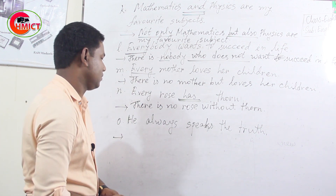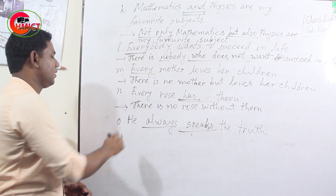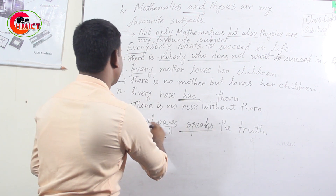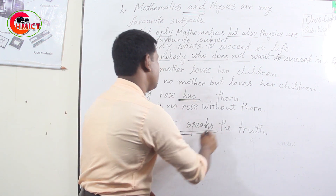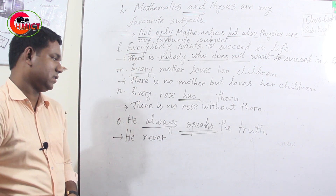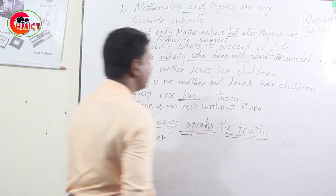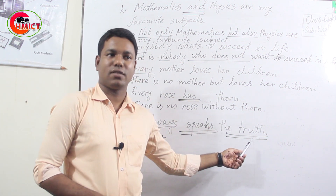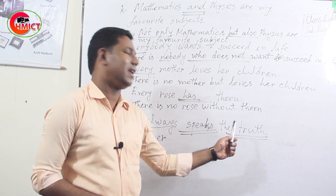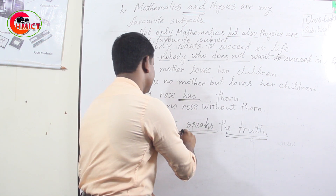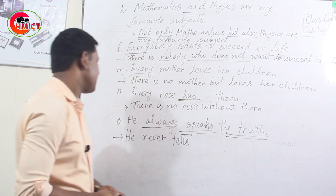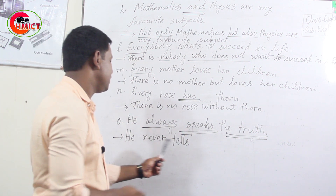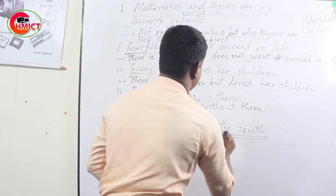For sentence O: 'He always speaks the truth.' You have to use 'never' at the place of 'always'. Then you use the antonym of 'truth', which is 'lie'. But remember: we say 'speak the truth', but we cannot say 'speak the lie' — we say 'tell a lie'. Since the subject is 'he' (third person singular), the verb takes the S/ES form: 'tells'. So: 'He never tells a lie.'